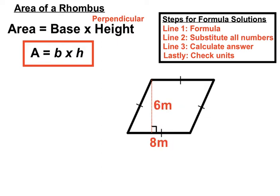Alright, let's have some numbers here. We've got the base 8m and the perpendicular height 6m. So all we do is substitute those numbers into our formula.